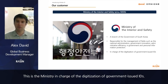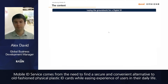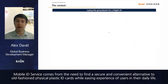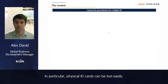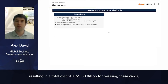To better understand the mobile ID card service, let me introduce the problem it solves first. Mobile ID services come from the need to find a secure and convenient alternative to old-fashioned physical plastic ID cards while easing users' experience in daily life. Physical ID cards can be lost easily — in the past 5 years, the number of reissuances due to loss of residence registration cards reached 7.26 million cases in Korea, resulting in a total cost of 50 billion Korean won.